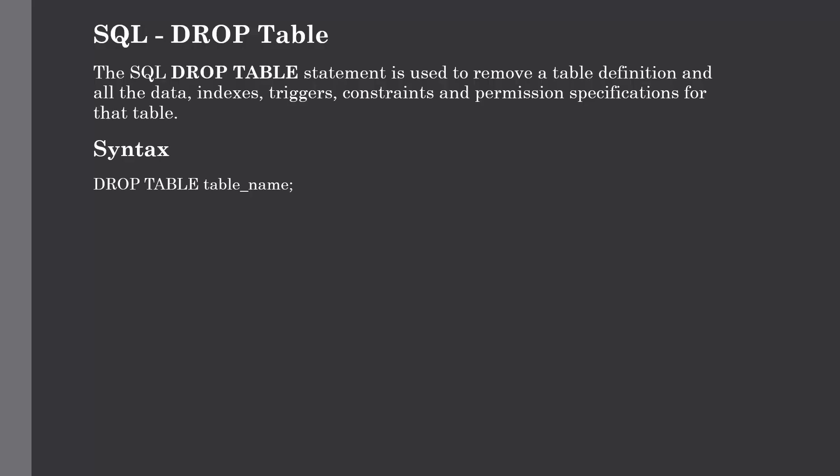The DROP TABLE statement is used to remove a table definition and all data — rows, indexes, triggers, constraints, and permissions — associated with that table. Be very careful when using this command because once a table is deleted, all information in it will be lost forever. Make sure the table doesn't contain any important data before dropping it. The syntax is simply: DROP TABLE followed by the table name.